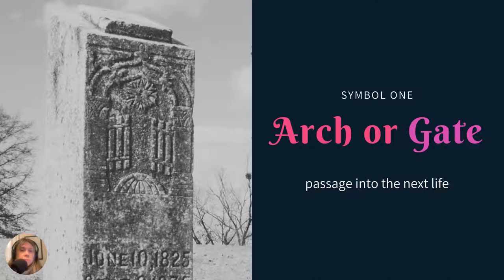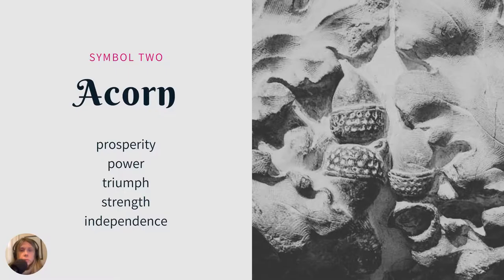The first symbol is an arch or a gate. Pretty self-explanatory — it's the passage into the next life. You'll also see tombstones that might be in the shape of an arch, but this example here, as you can see, is an open gate. It's probably the gates of heaven welcoming that person in.